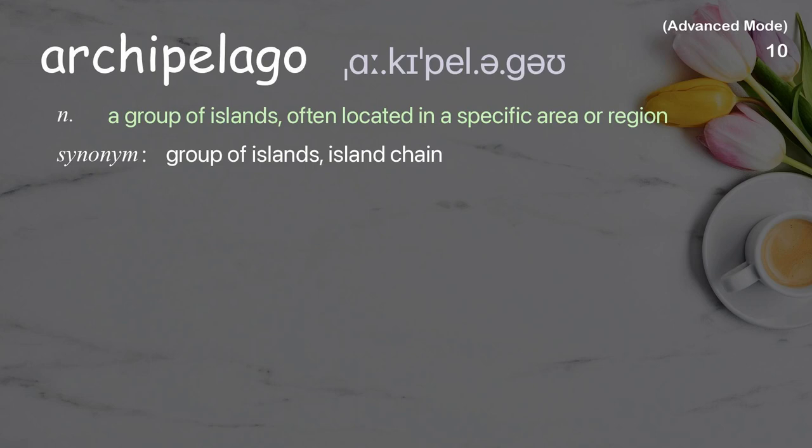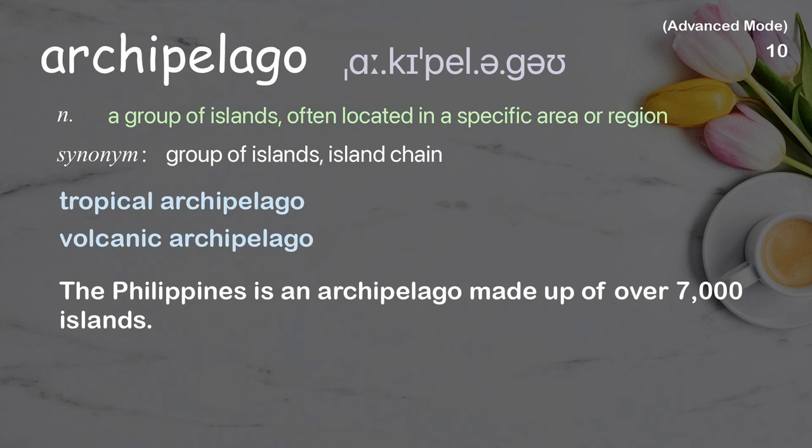Archipelago: A group of islands often located in a specific area or region. Examples: tropical archipelago, volcanic archipelago. The Philippines is an archipelago made up of over 7,000 islands.